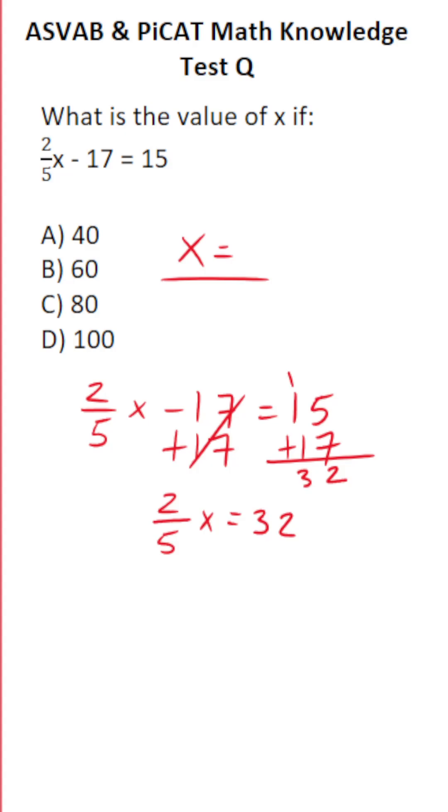To get rid of this two-fifths in front of x, we're going to multiply both sides of the equation by the reciprocal, notably by 5 over 2. This crosses out here and here, leaving you with x on this side.